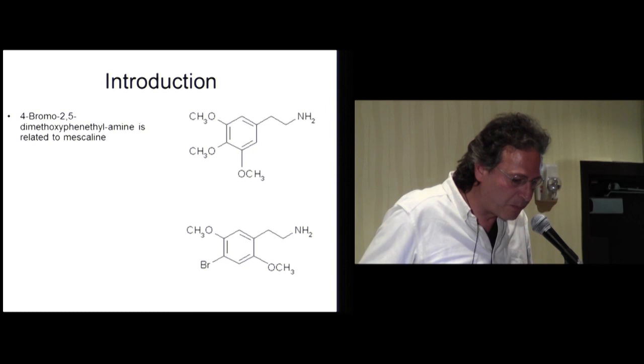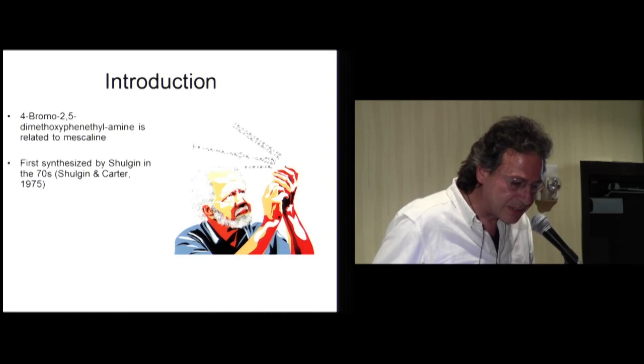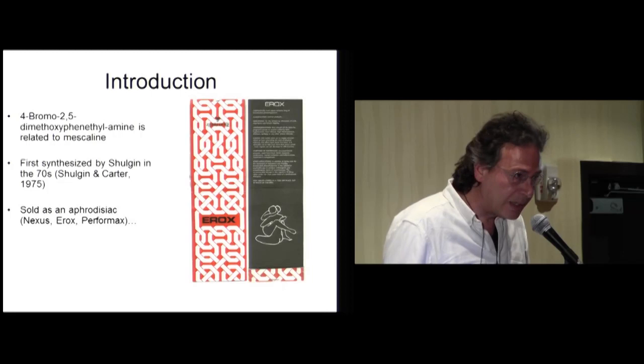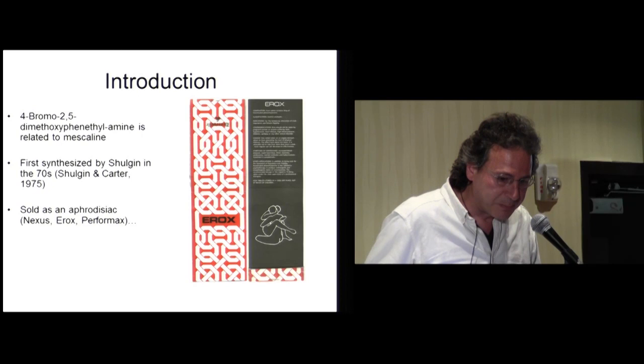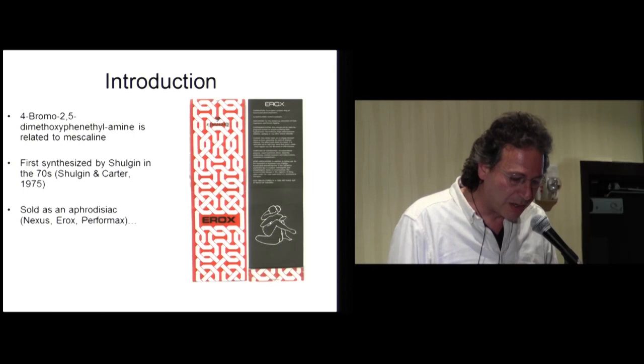2CB is the acronym of 4-Bromo-2,5-Dimethoxyphenethylamine, and it's a compound that is quite related with mescaline. It was first synthesized by Shulgin in 1974, and it was legally available in certain smart shops above all in Europe, and also was commercialized as an aphrodisiac with the trademarks of Nexus, Eros, or Performax.